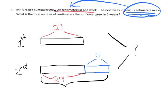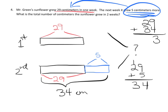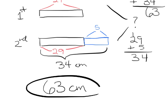First, I add 29 plus 5: nine plus five is 14, put the 4, carry the 1; 2 plus 1 is 3, so the second week's total length is 34 centimeters. Now for the grand total, I add 29 plus 34: nine plus four is 13, put the 3 carry the 1; three plus two plus one is six. The total growth in two weeks is 63 centimeters.